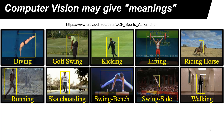Researchers have spent many decades trying to make computers capable of understanding images and video. A lot of progress has been made, but much more is needed. Today's computer vision is not yet capable of connecting many different pieces of information together.